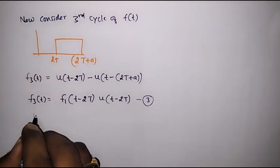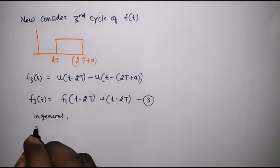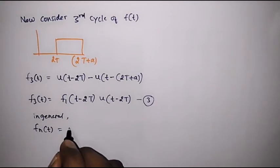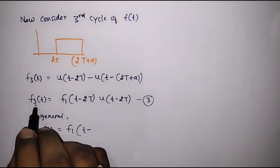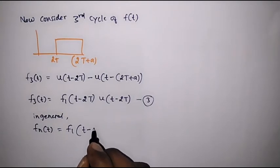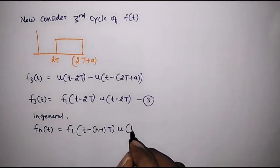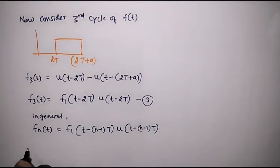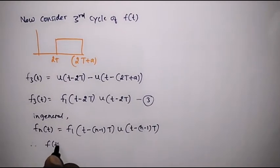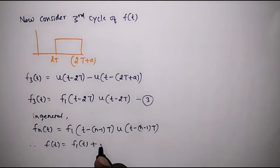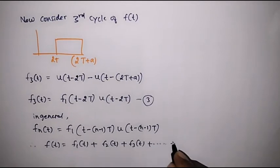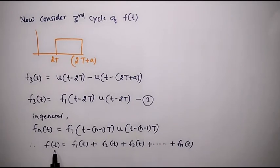In general, the nth cycle fn(t) can be represented in terms of f1(t) as: fn(t) = f1(t minus (n−1)T) · u(t minus (n−1)T). Therefore f(t) can be written as f1(t) + f2(t) + f3(t) + ... + fn(t), because f(t) is a periodic signal composed of its first cycle, second cycle, third cycle, and so on.